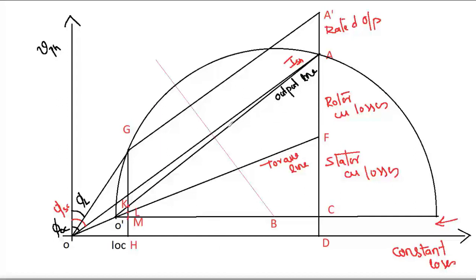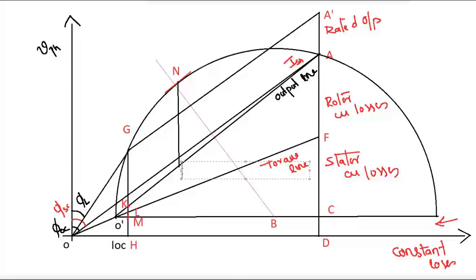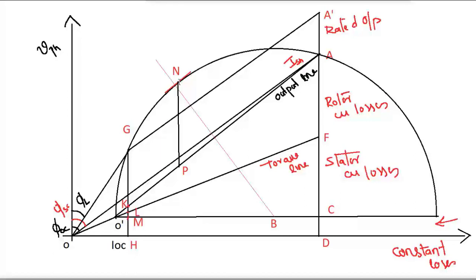To find out the maximum output, draw a line parallel to the output line and tangential to the circle. Let me call this tangent point N. From point N, drop a perpendicular line to the x-axis until it touches the output line. Let me call this point P. The length NP represents the maximum output.